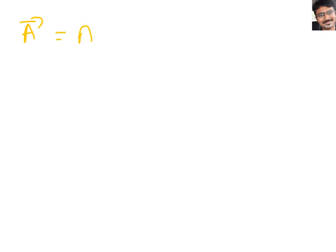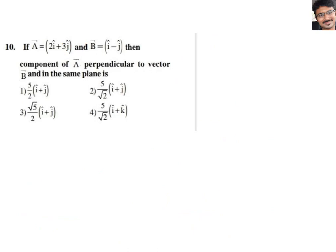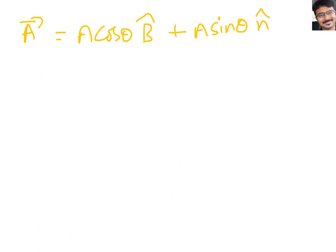Let me write this clearly: A bar = A cos theta · B cap + A sin theta · N cap. Now what do we actually need? We need the component of A bar perpendicular to vector B bar and in the same plane. Observe: there are two components of A bar. One is A cos theta · B cap — this is the component along B bar. The other is A sin theta · N cap — this is perpendicular to B bar.